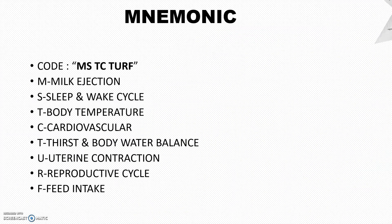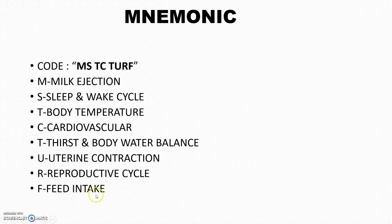I will be splitting those seven into much more things so you can easily write and remember the main important topics. The mnemonic is: M.S. Dhoni went to turf with a TZ. M for milk ejection, S for sleep and wake cycle, T for body temperature, C for cardiovascular activities, T for thirst and water body balance, U for uterine contraction, R for reproductive cycle, and F for feed intake.